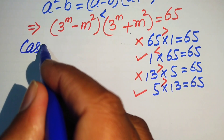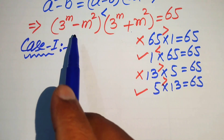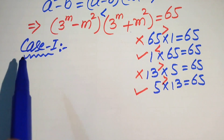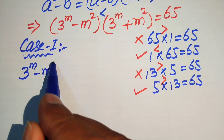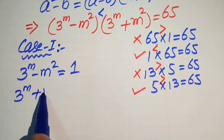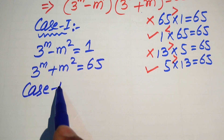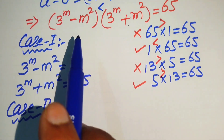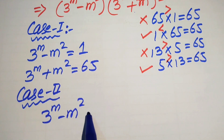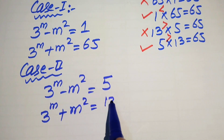In Case 1, we compare the first factor to 1 and the second to 65: 3 to the power of m minus m squared equals 1, and 3 to the power of m plus m squared equals 65. In Case 2, we compare to 5 and 13: 3 to the power of m minus m squared equals 5, and 3 to the power of m plus m squared equals 13.